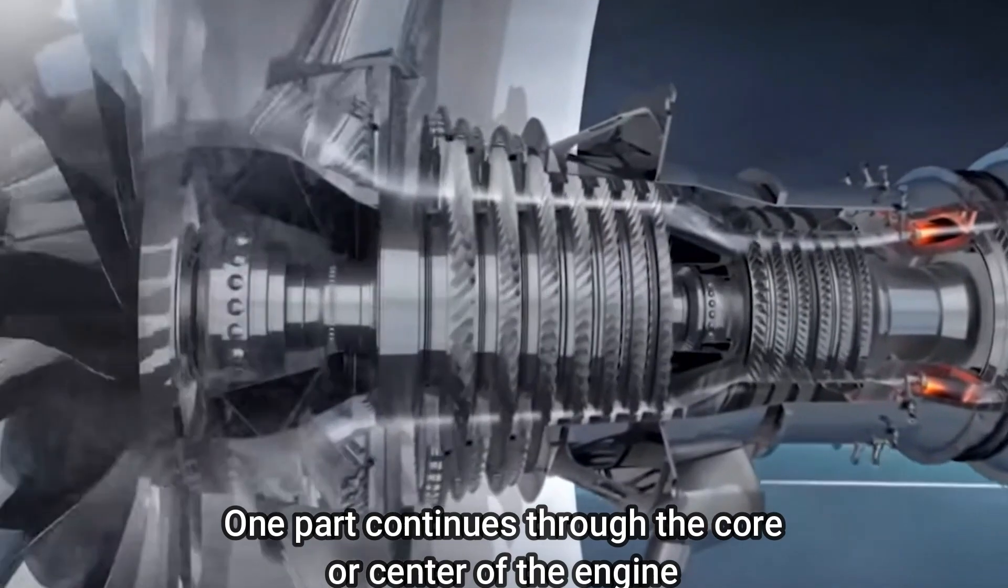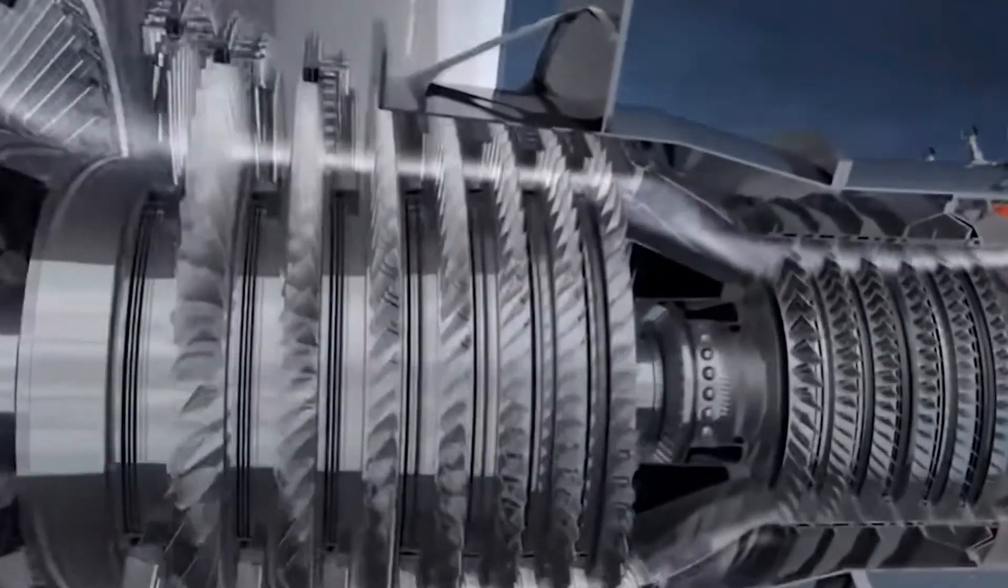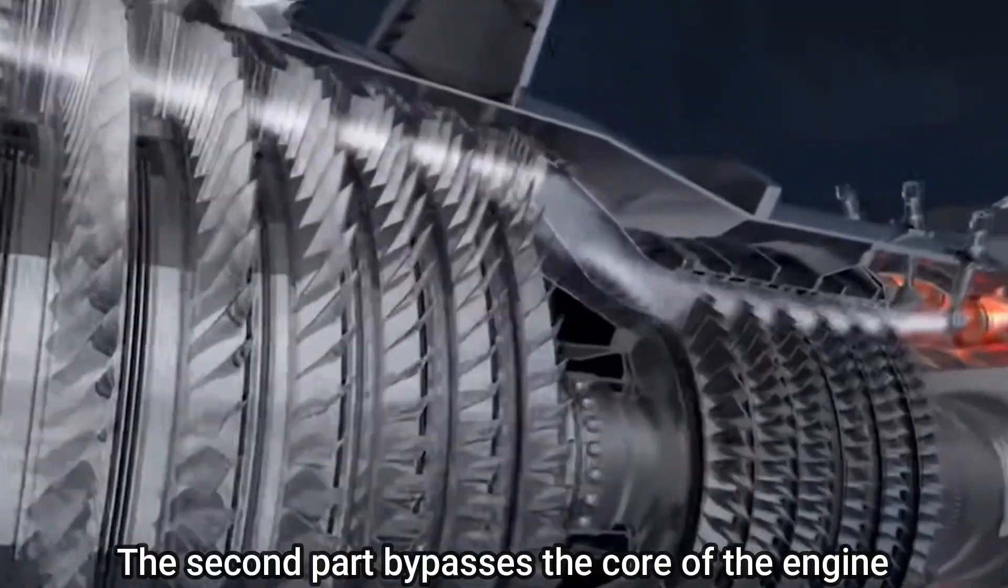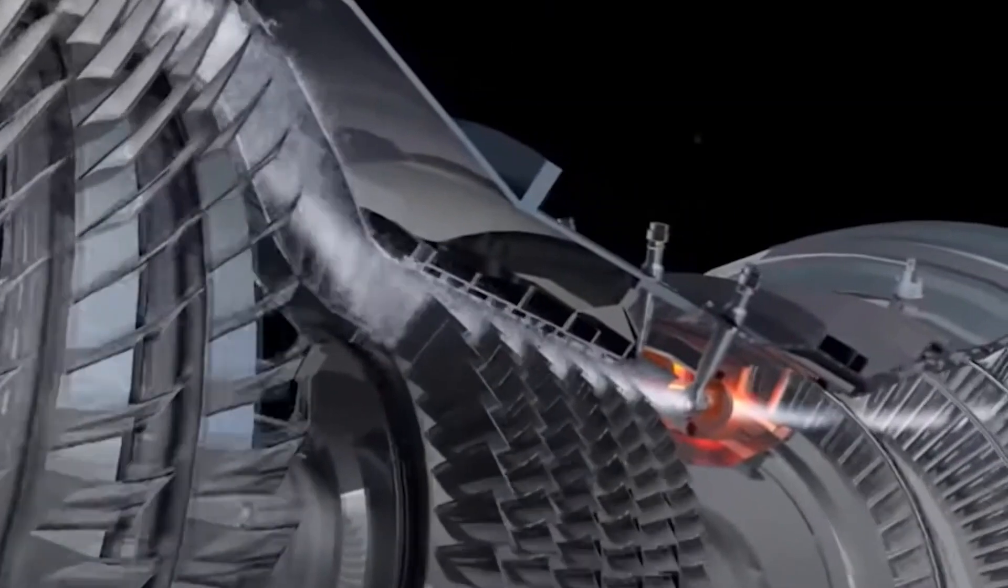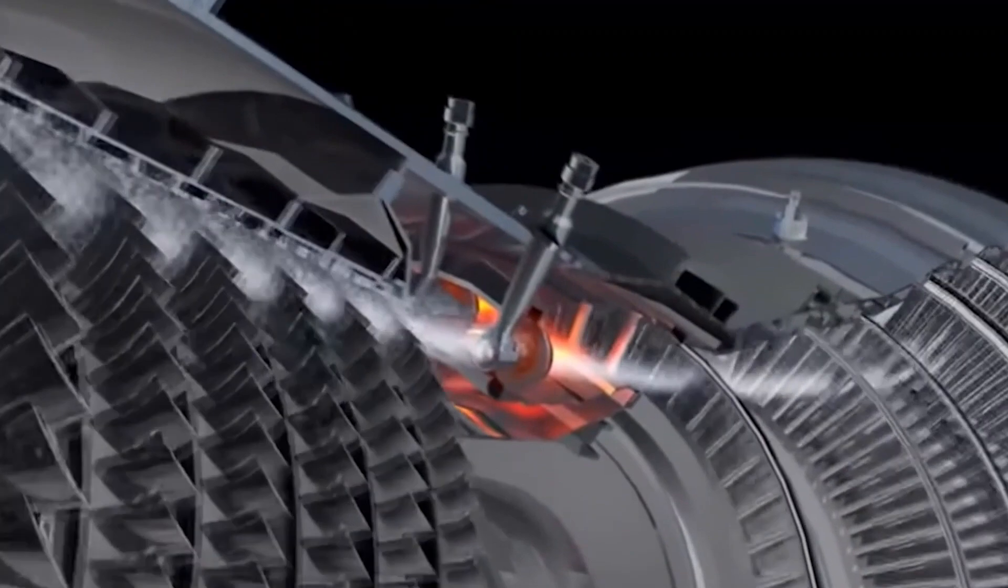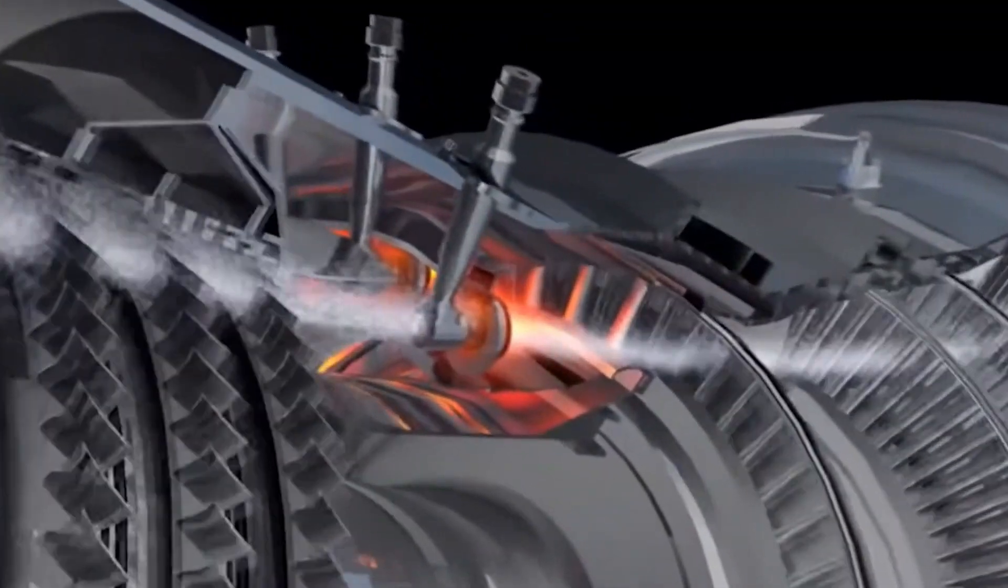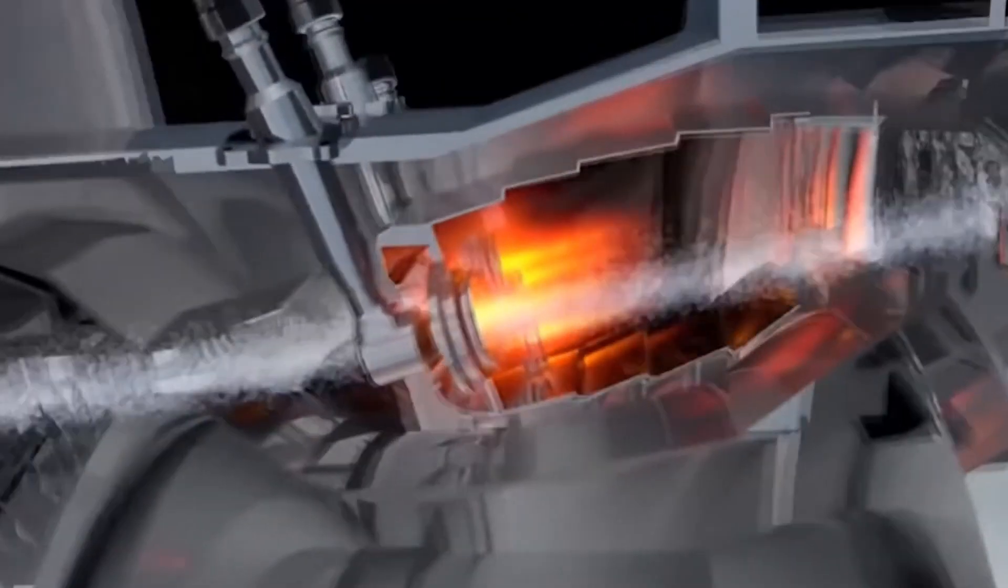One part continues through the core or center of the engine, where it is acted upon by other engine components. The second part bypasses the core of the engine. It goes through a duct that surrounds the core to the back of the engine, where it produces much of the force that propels the airplane forward. This cooler air helps to quiet the engine as well as adding thrust to the engine.